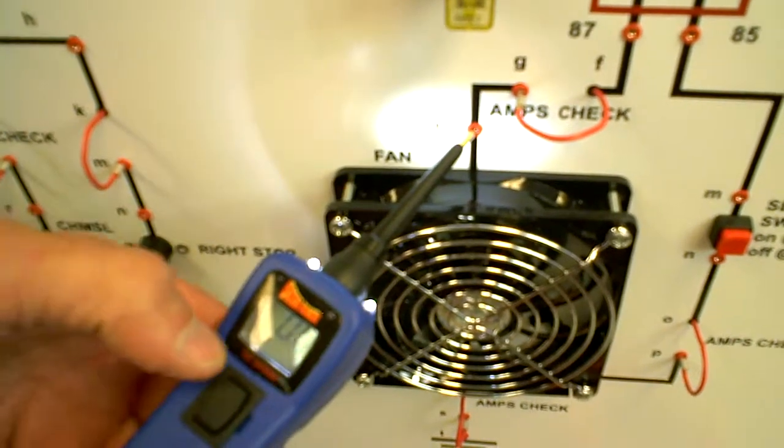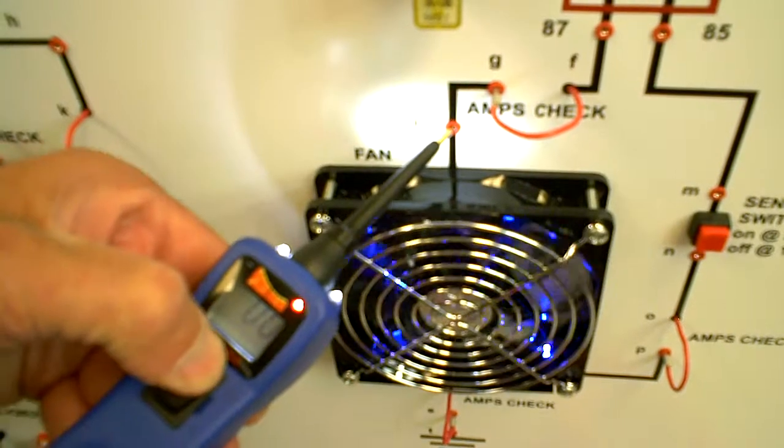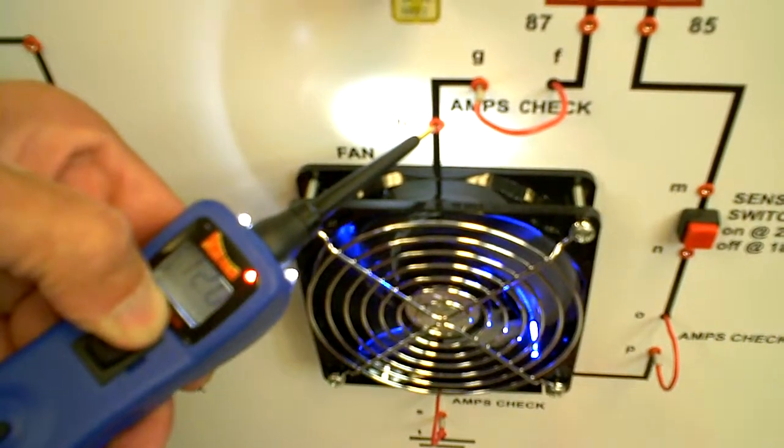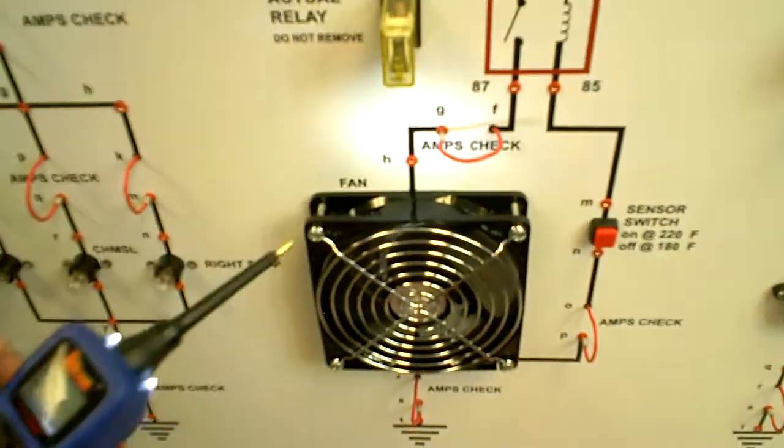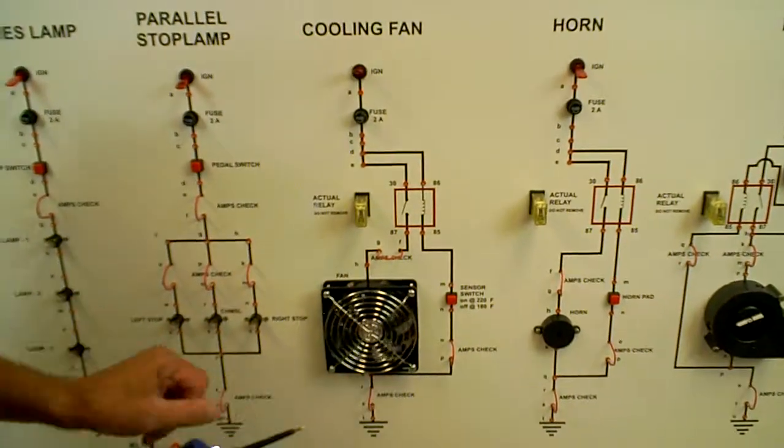The great thing about a power probe is I can apply 12 volt power or the negative. So if I hit 12 volt power, my fan comes on. In terms of diagnostic abilities in this fan, the student can learn how to know where power should be and where ground should be after a circuit.